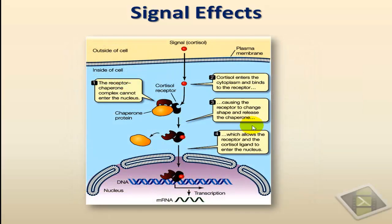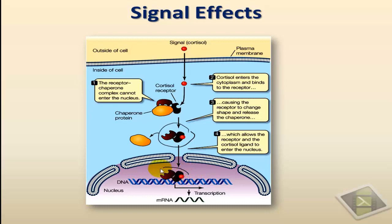The third type of cell response involves changes in the level of gene expression. The example here is that of lipid-soluble signals that diffuse into the cytoplasm, bind to their cytoplasmic receptor, and form a complex that is transferred to the nucleus to act as a transcription factor, resulting in the formation of specific proteins. That's what we mean by gene expression.